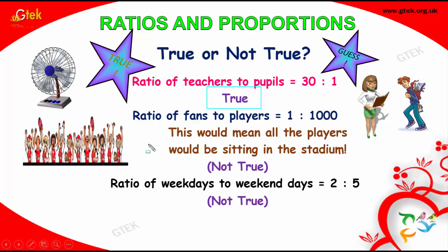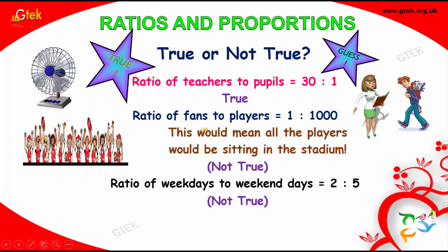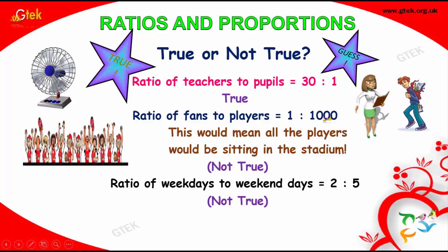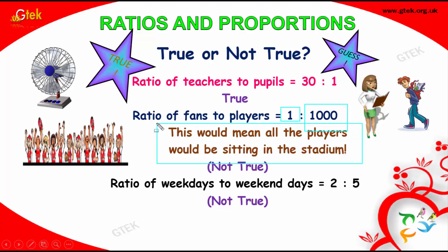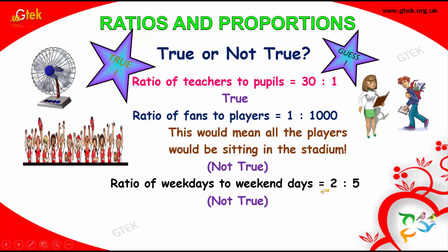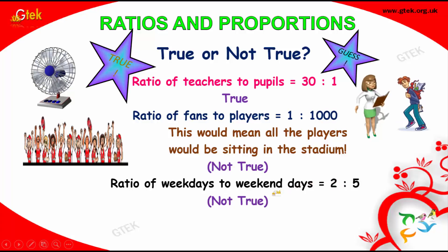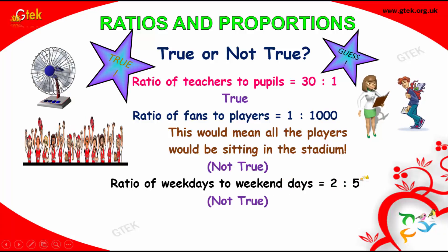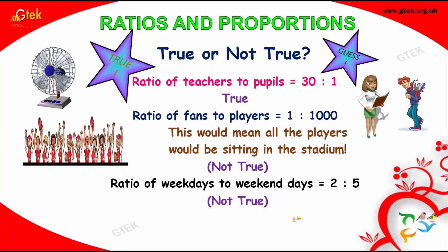Let's see the actual problems. The ratio of fans to players is 1 is to 1000 — one fan to 1000 players. Is it possible? This would mean all the players would be sitting in the stadium, so the option is not true. The ratio of weekdays to weekend is 2 is to 5 — that gives 5 weekends, which is not true. This is how you should be really careful while handling ratios and proportions.